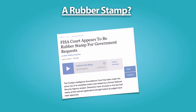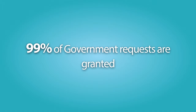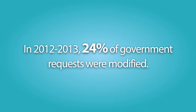The court has been recently criticized and characterized as a rubber stamp due to the fact that the court rejects very few government applications for surveillance orders. The Attorney General reported to Congress that 99% of all government requests are approved. That figure was challenged by a former presiding judge of the court in 2013, who countered that many applications are altered prior to final submission or are withdrawn, and that in 2012 through 2014, 24% of government requests were modified in response to questions from the court.